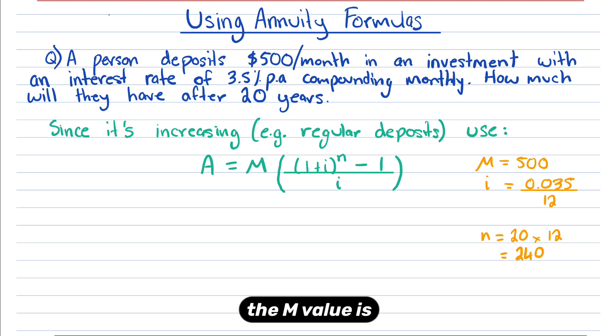In this formula, the M value is the amount you're depositing each compounding period, which is $500. The i part is the interest rate as a decimal divided by the compounding periods. And n is the total number of compounding periods throughout the investment.